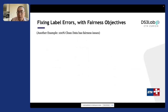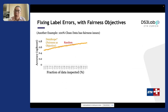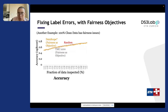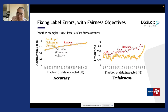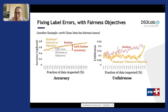You can also plug in different types of objectives. Here's an application where a 100% clean dataset actually has a fairness issue — meaning if you clean up the whole dataset, the model could be unfair. You can use fairness as an objective for data debugging. In this case, with the fairness objective for the Shapley value approach, you can still improve accuracy; but compared to a random cleaning strategy that makes the model increasingly unfair, the fairness-objective strategy brings up your accuracy by at least 20 points while essentially keeping the same level of fairness.